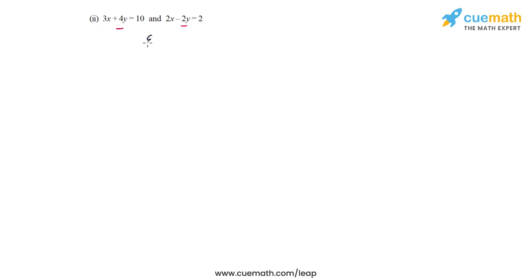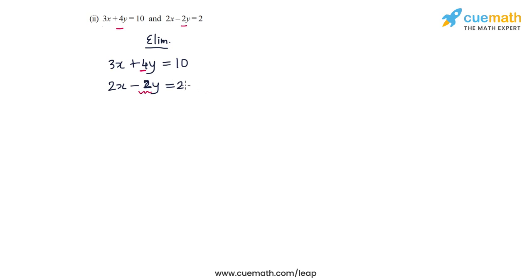The second pair of equations is 3x plus 4y equal to 10 and 2x minus 2y equal to 2. Let's first solve this pair using elimination. We can see that the coefficient of y is 4 in the first equation and minus 2 in the second. So I can modify the second equation so that the numerical magnitude of the coefficient of y is the same in both equations. If I multiply the second equation by 2, this minus 2 will turn into minus 4, and then I can add the two equations.